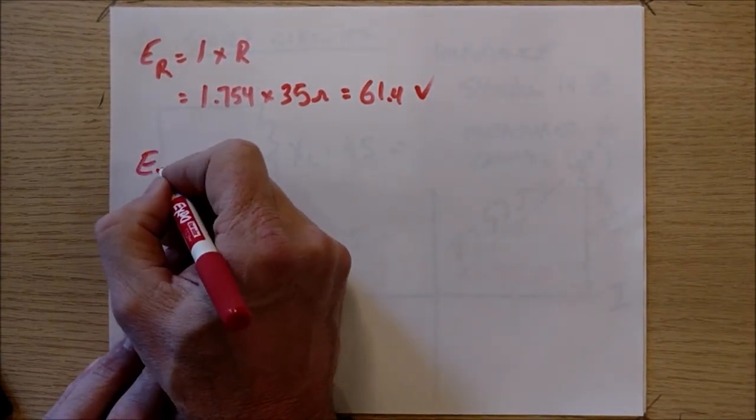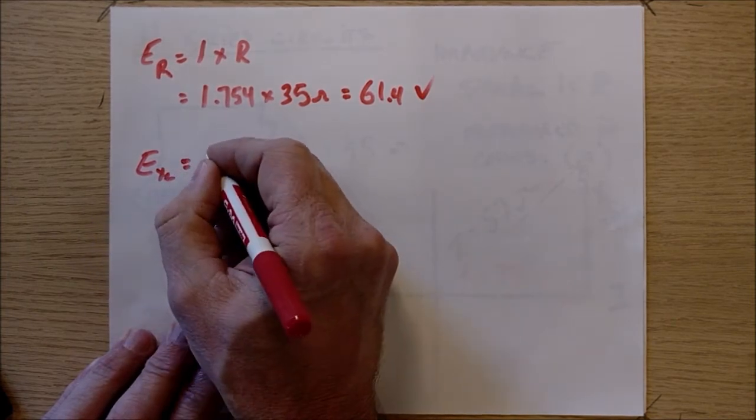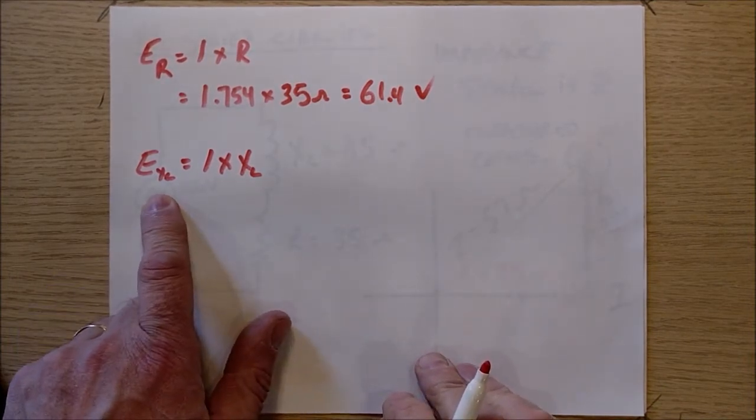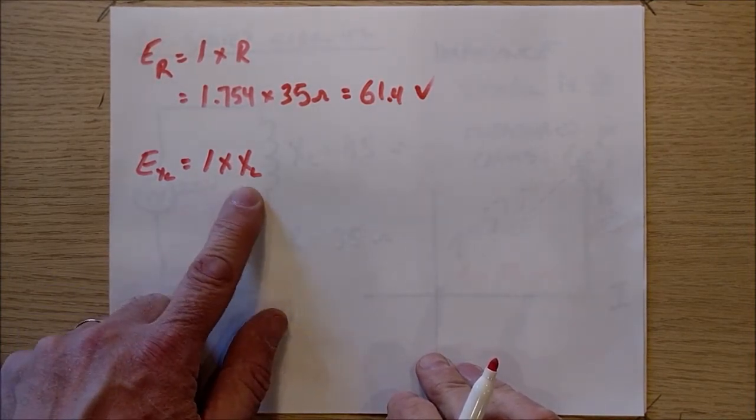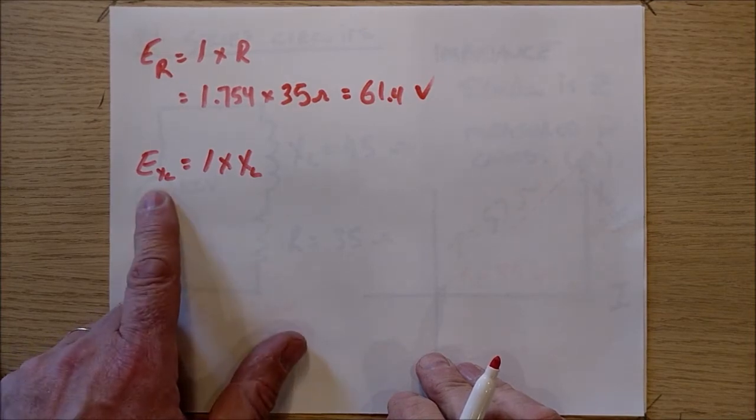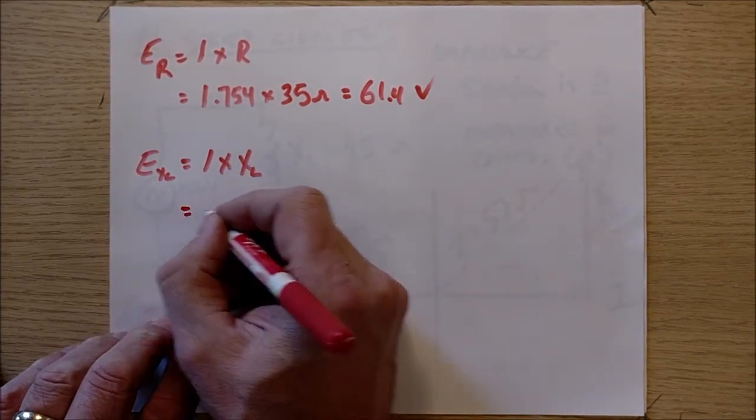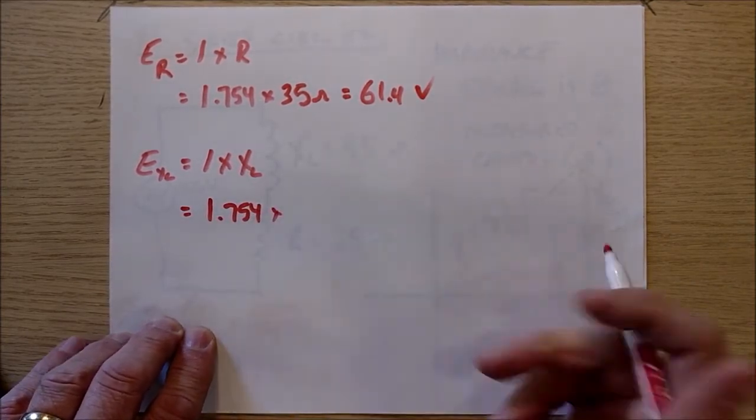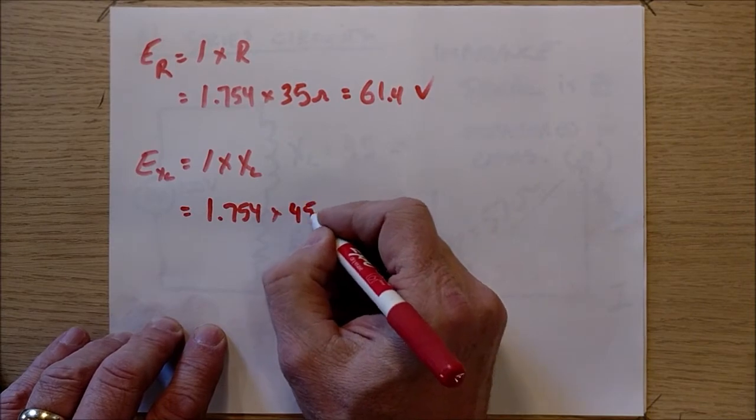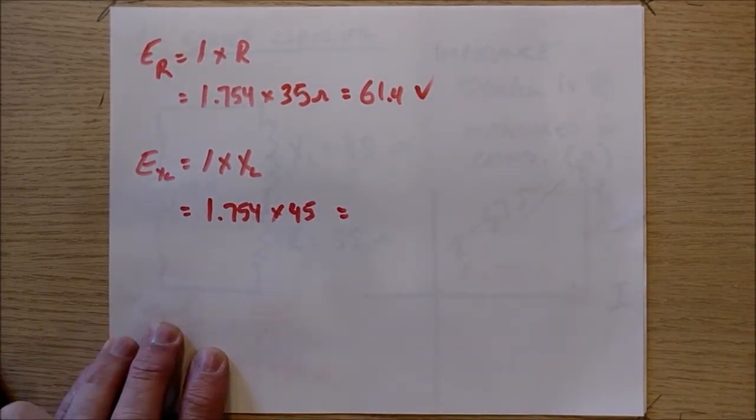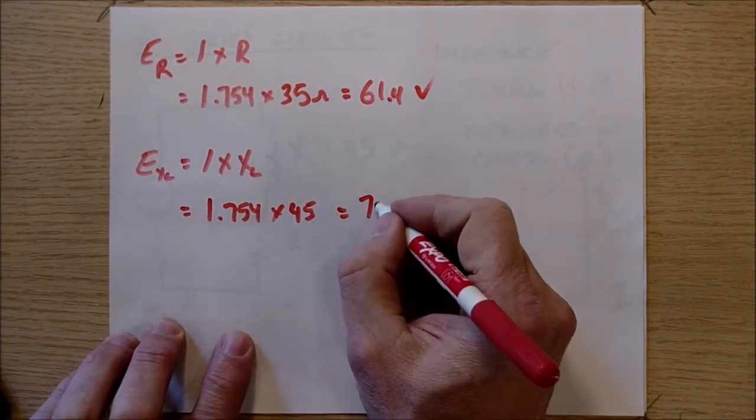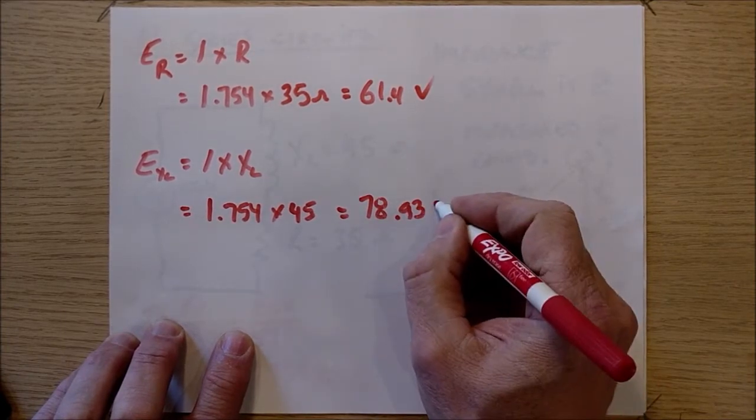I can also calculate EXL. It is going to be I times XL. Basically the same as level one. If you wanted ER2, it would be I times R2. Well, now I'm calculating EXL. It is I times XL. And so my current 1.754 and my XL was 45 ohms. 1.754 times 45 equals 78.93 volts.